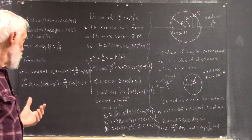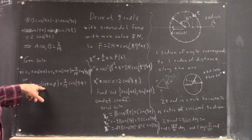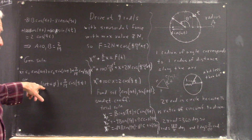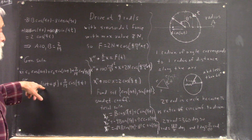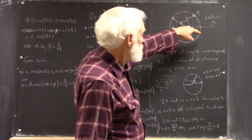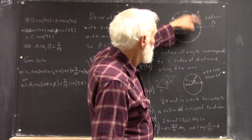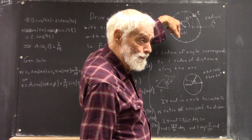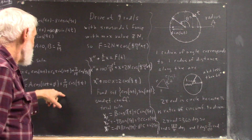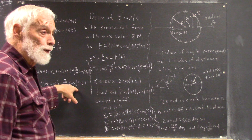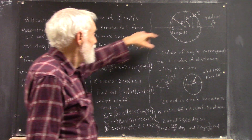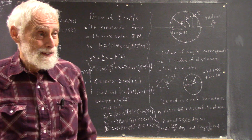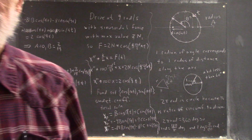And now what you've got is a cosine function, which can be modeled by a motion around the reference circle at 10 radians per second, and some multiple cosine function that goes around at 9 radians per second. What's that solution going to look like?